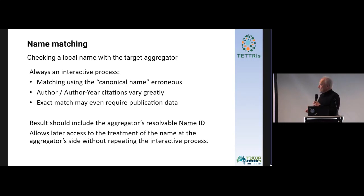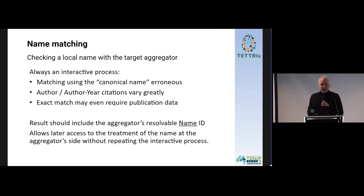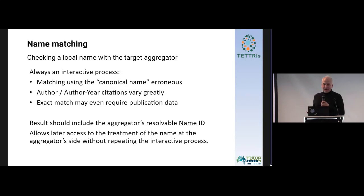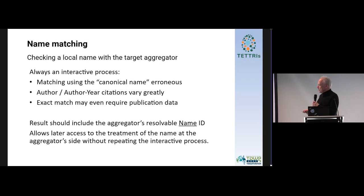We need identifiers for names — unique identifiers for names, unique identifiers for everything that is really used as a name. In World Flora Online, we have the definition of effectively published names — that's a botanical concept. I wouldn't go so far that every mention of a name needs a unique identifier, but everything that's really used should have an ID, and that's, for example, realized in World Flora Online now.